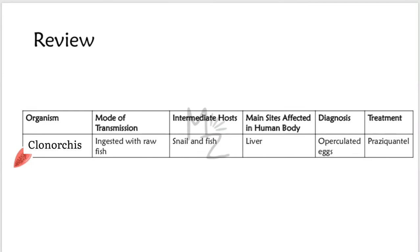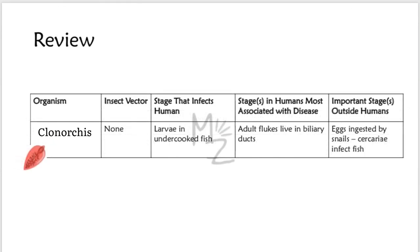Quick review: The organism is Clonorchis sinensis. Its mode of transmission is via the feco-oral route and by eating raw or undercooked fish. Intermediate hosts are freshwater snail and fish; definitive hosts are human beings. The main sites affected are the liver, especially the biliary ducts. Diagnosis is based on finding operculated eggs under the microscope. Treatment of choice is praziquantel. It has no insect vector. The infective stage for humans is the metacercaria in undercooked fish, and the stage most associated with disease is the adult fluke in the biliary ducts. Important stages outside humans are eggs ingested by snails and cercariae that infect fish.